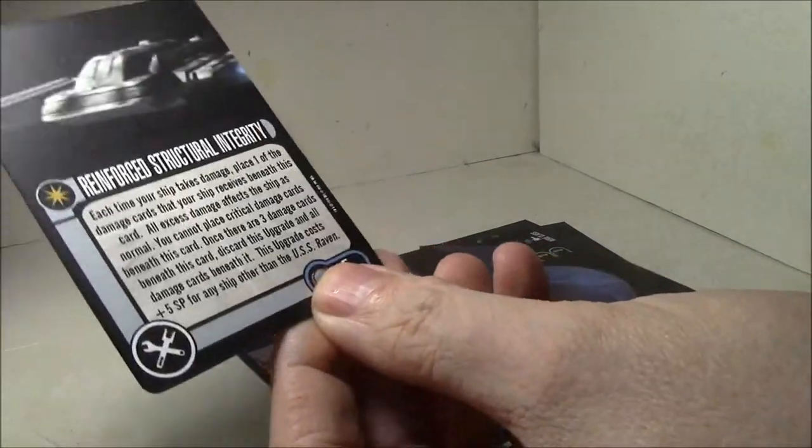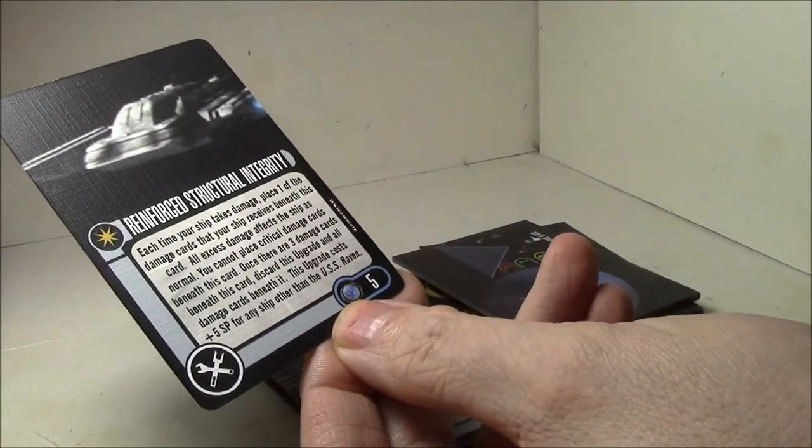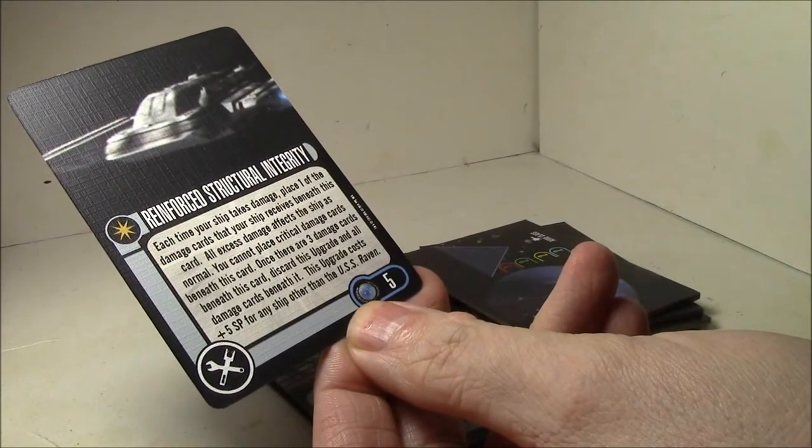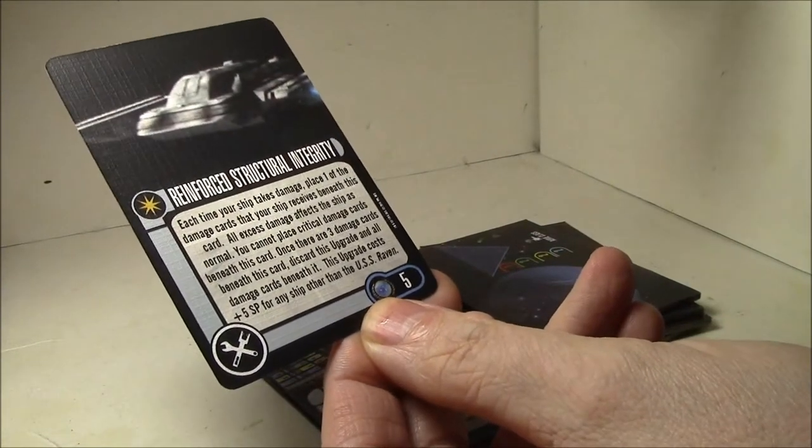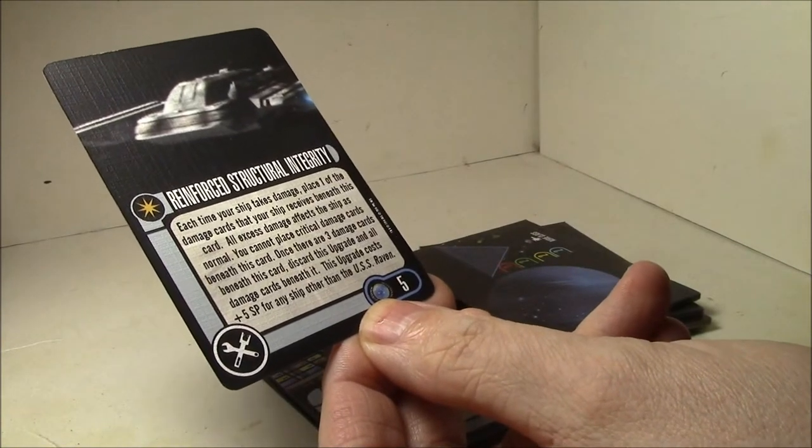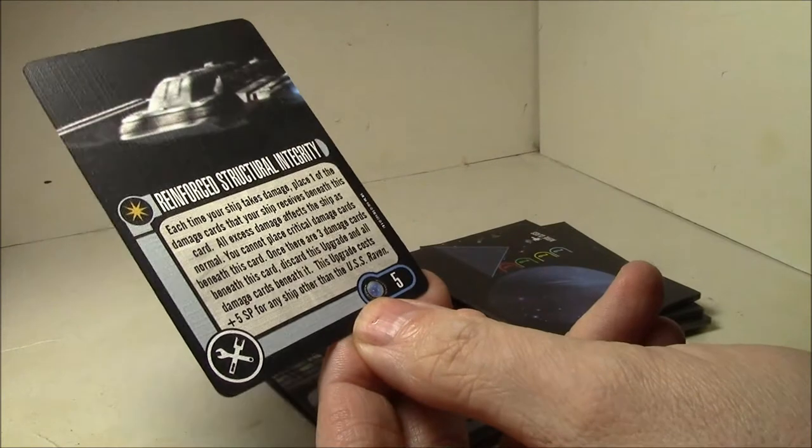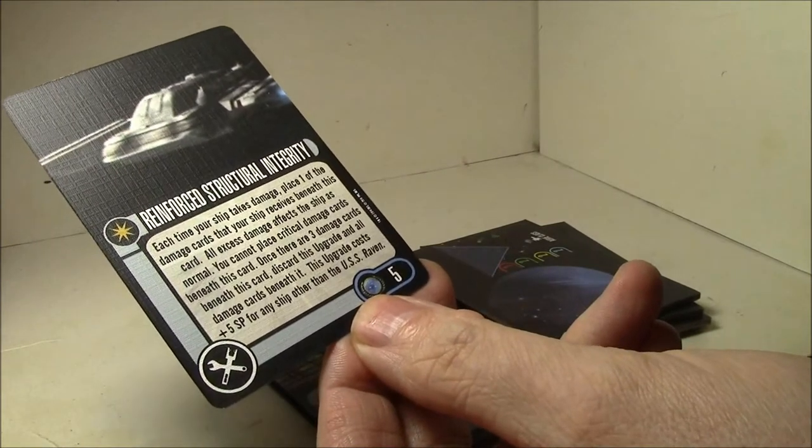Reinforce Structural Integrity. Each time your ship takes damage, place one of the damage cards that your ship receives beneath this card. All excess damage affects the ship as normal. So that's one per attack. You can place critical damage cards. Once there are three damage cards, discard this upgrade and all damage cards beneath it.